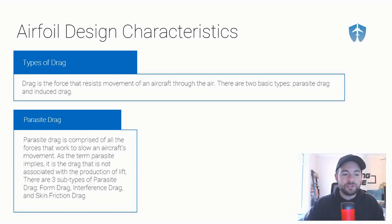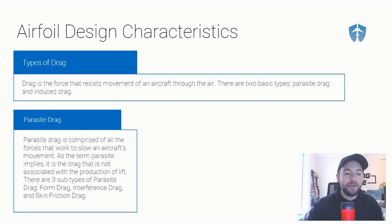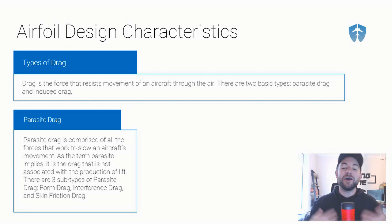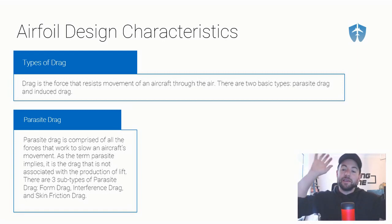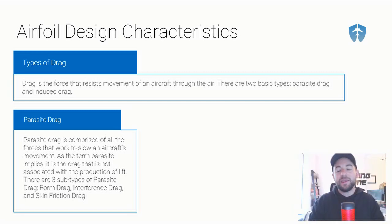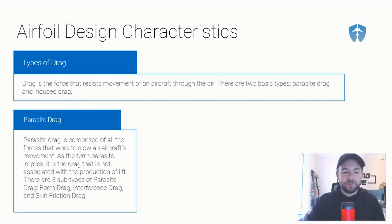We've got parasite drag, which is comprised of all the forces working to slow an aircraft's movement. As the term implies — parasite — it is a drag that is not associated with the production of lift. It is not helping us do anything; it has no positive benefit. There are three different subcategories of parasite drag: form drag, interference drag, and skin friction drag.